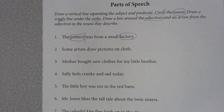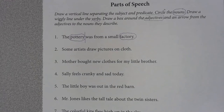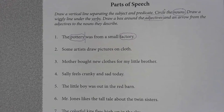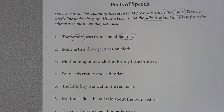Now, what we're going to do is look for our verb. When we find our verb, we are simply going to draw a wiggly line. What is our verb? Not small — small is describing something. Look where we drew the subject-predicate line. Was. Was. Very good.